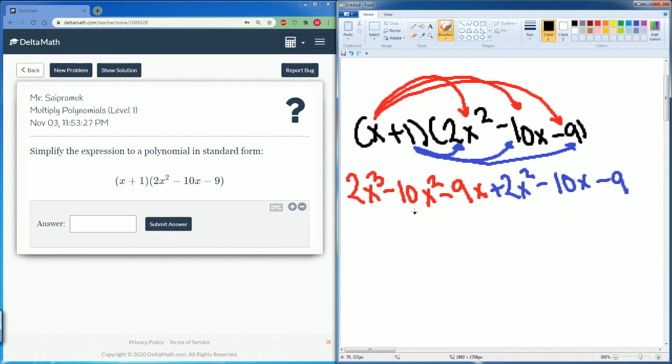We can combine some like terms. So negative 10x and 2x becomes negative 8x squared. Then we have our negative 9x and negative 10x. That becomes negative 19x. Nothing happens to the 2x to the third power, and nothing happens to the minus 9, so we just bring those down.